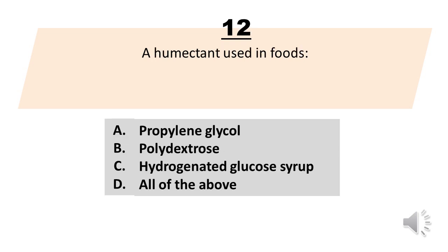A humectant used in foods. A. Propylene glycol. B. Polydextrose. C. Hydrogenated glucose syrup. D. All of the above.